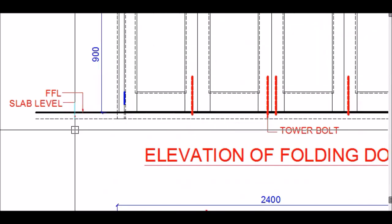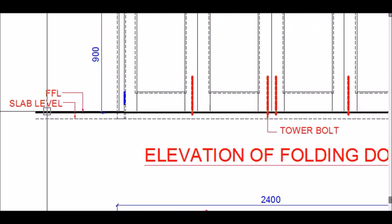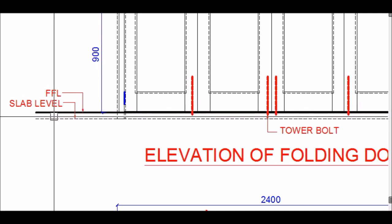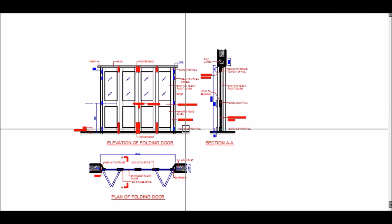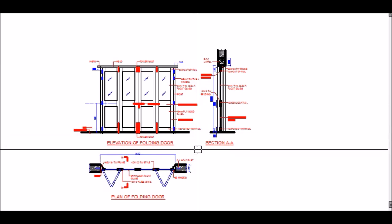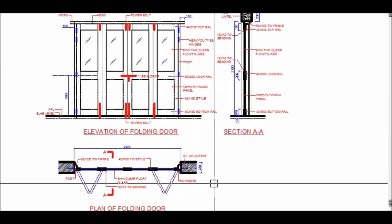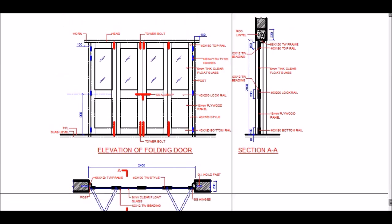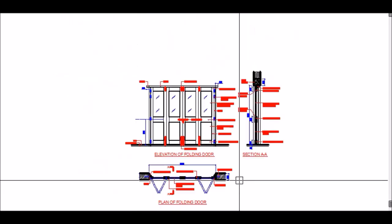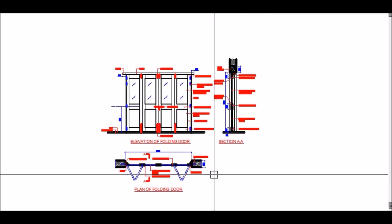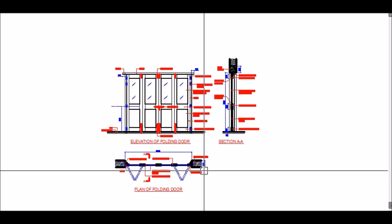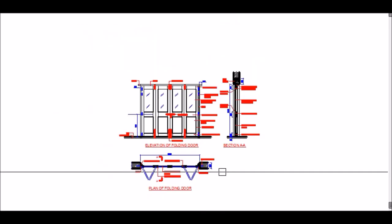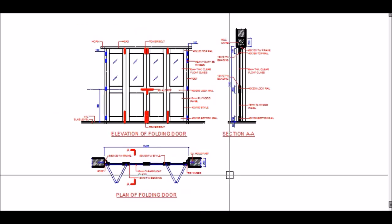A dotted line at the bottom indicates the slab level and finished floor level. I hope the construction of the folding door is now clear and that you can use this to make your own drawing of the folding door.